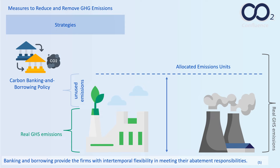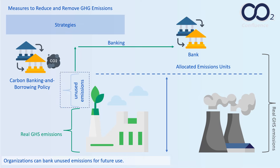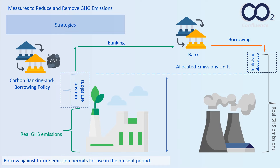Banking and borrowing provide firms with intertemporal flexibility in meeting their abatement responsibilities. Organizations can bank unused emissions for future use or borrow against future emission permits for use in the present period.